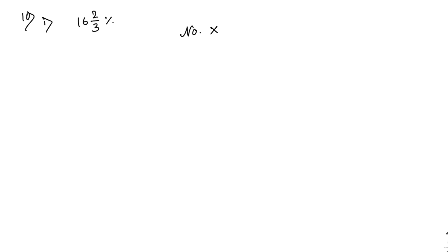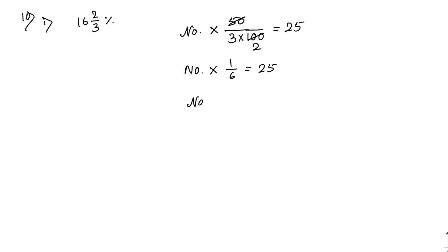16 whole 2 by 3 percent equals 50 by 3 percent, which means 50 by 300. Setting this equal to 25: 1 by 6 of the number equals 25, so the number equals 25 into 6, which is 150. Alternatively, let the number be x; then x into 50 by 300 equals 25, so x equals 150.